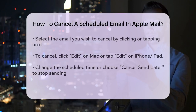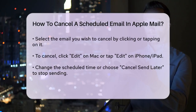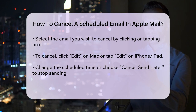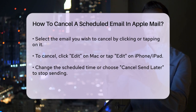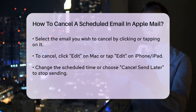To cancel the scheduled email, you'll need to edit the send time. On your Mac, click on the Edit button after opening the email. On your iPhone or iPad, tap Edit after selecting the email. Here you'll have the option to change the scheduled time or cancel the send altogether.